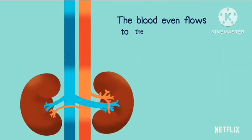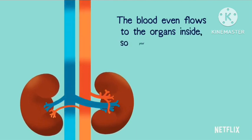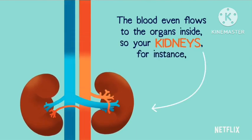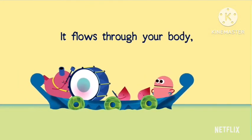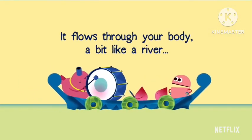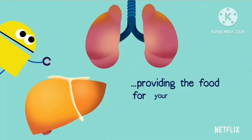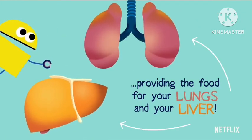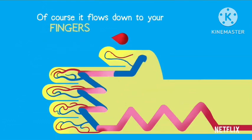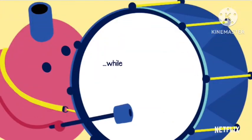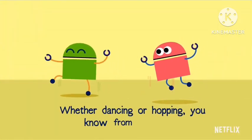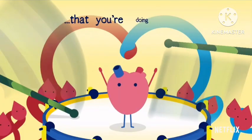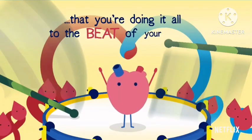Your eyes need the blood to keep seeing and blinking. Your brain needs a lot for intelligent thinking. The blood even flows to the organs inside, so your kidneys, for instance, stay fully supplied. It flows through your body a bit like a river, providing the food for your lungs and your liver. Of course it flows down to your fingers and thumb while your heart pumps it out with a sound like a drum. Whether dancing or hopping, you know from the start that you're doing it all to the beat of your heart.